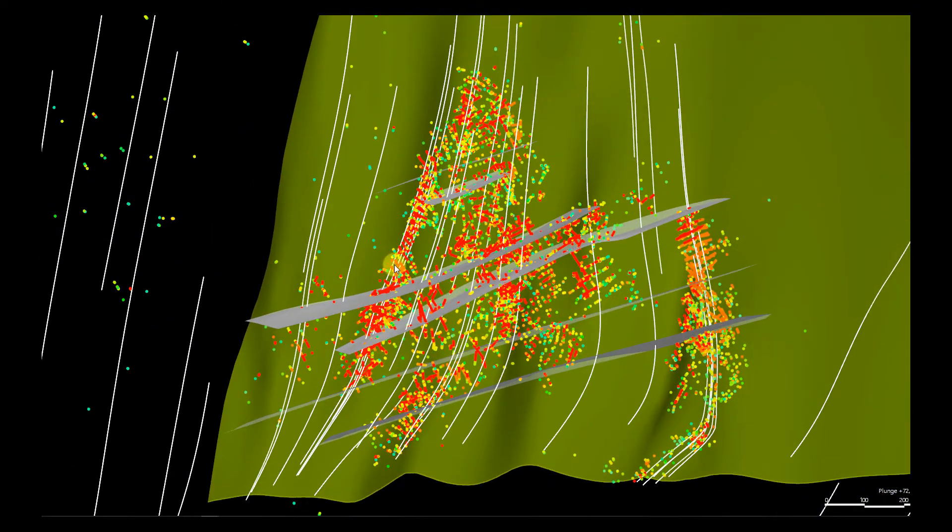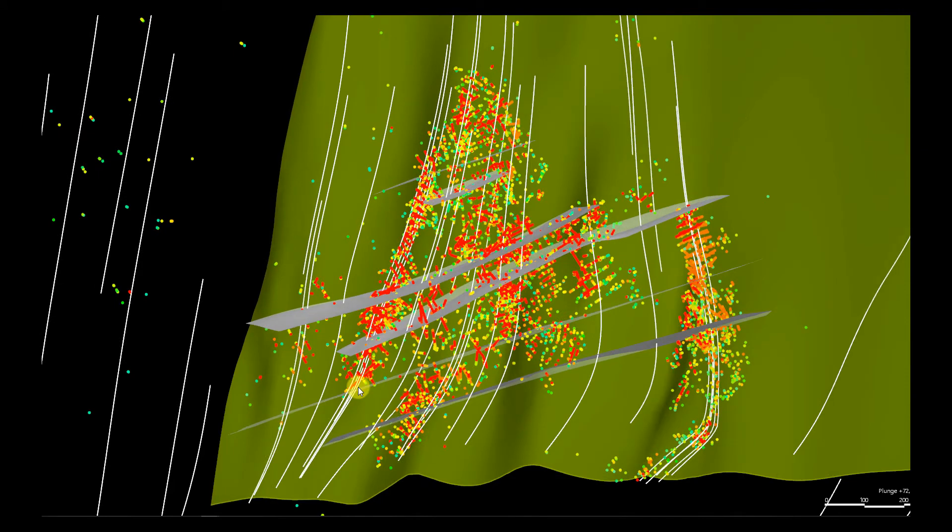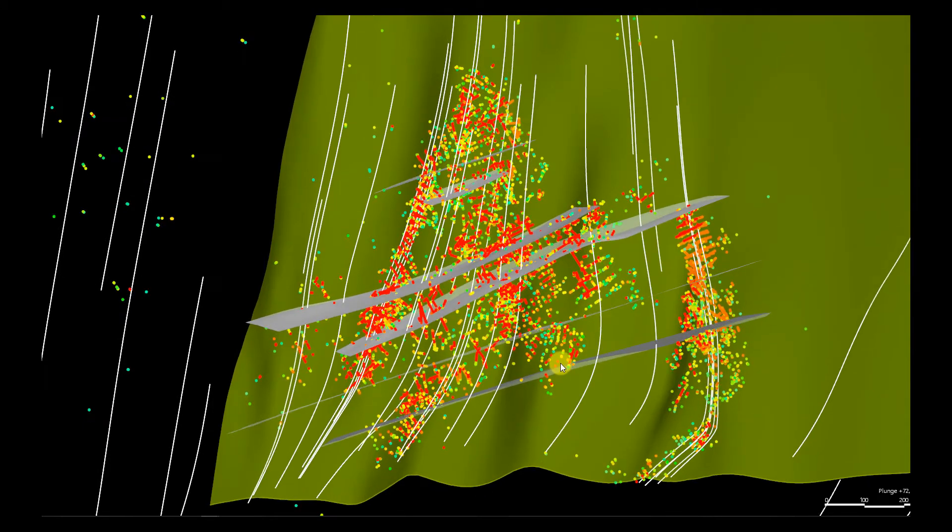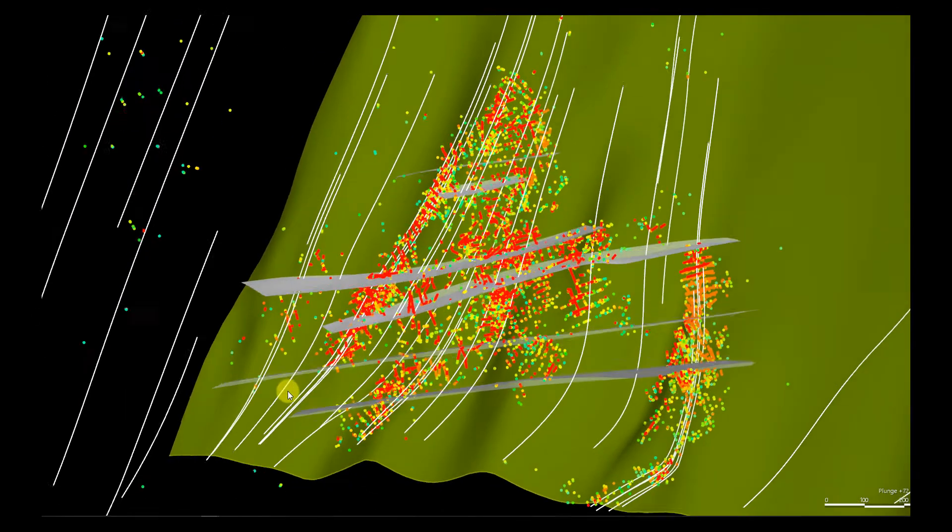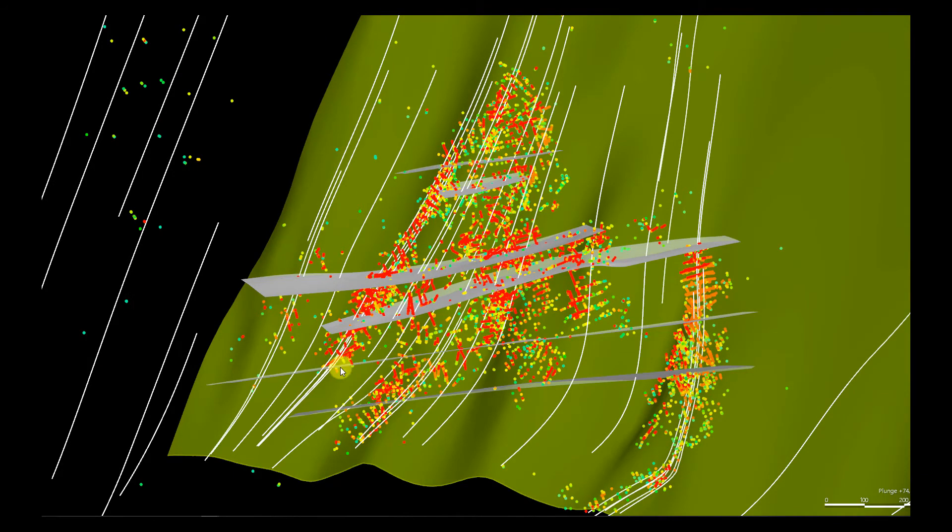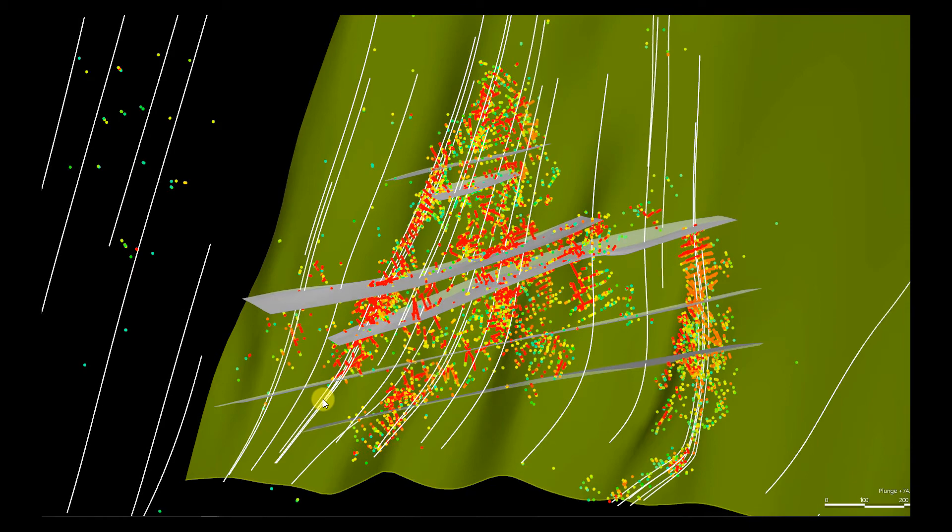All these grades that are running parallel to the fold axes are in places simply truncated by these discontinuities, and these discontinuities are planar, so they have to have formed after the folding or at least either after or during the folding process.